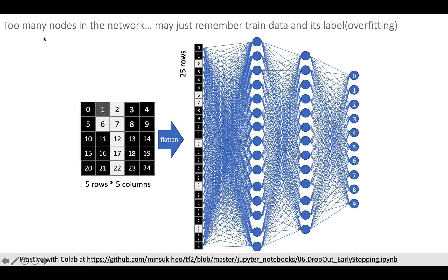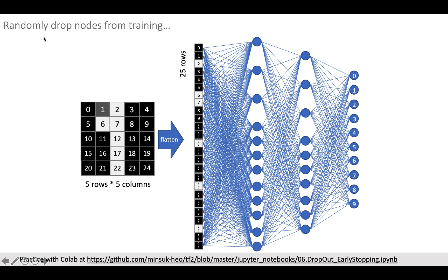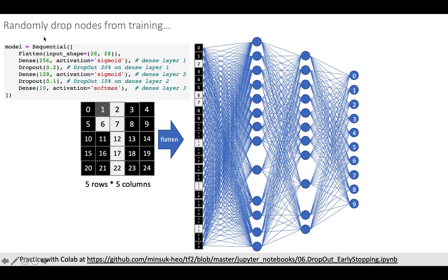Therefore, reducing the number of nodes during training can reduce the features of the network. Dropout is a technique that we randomly not use some nodes during training. Since we are reducing nodes, aka features, during training, variances go lower. So it helps overcome overfitting.